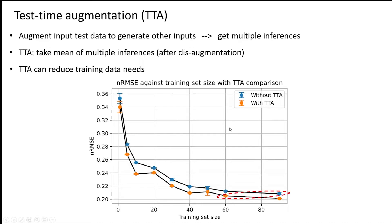By doing this, we can effectively reduce the amount of training data needed to train up that convolutional encoder-decoder. With the use of test time augmentation, with only a training set size of 60, we can outperform a network that had 90 objects included when test time augmentation was not used. So that's helping us in terms of reducing training data needs.